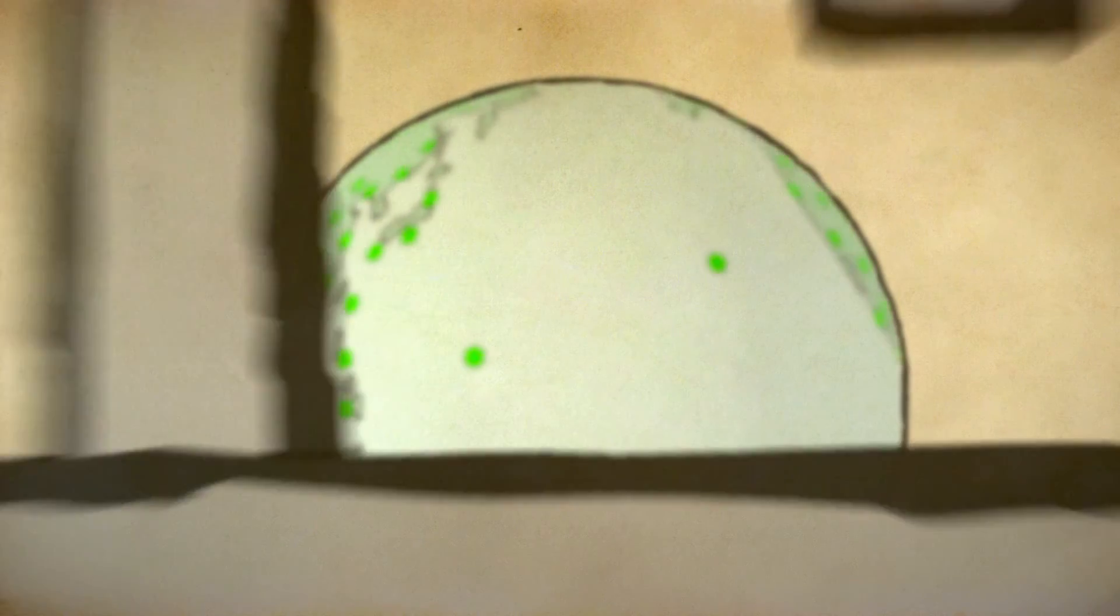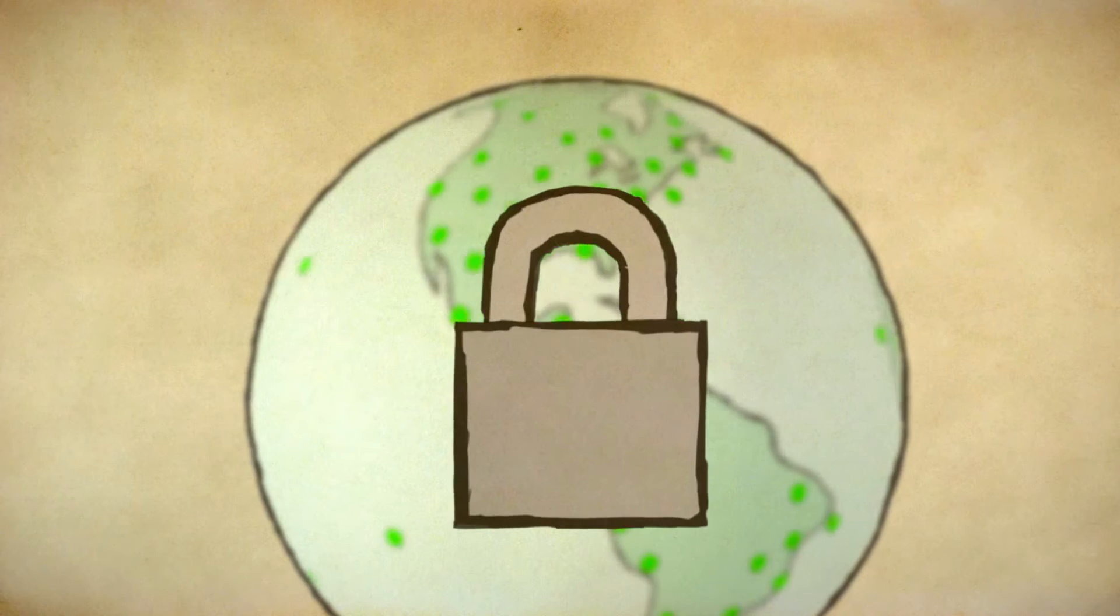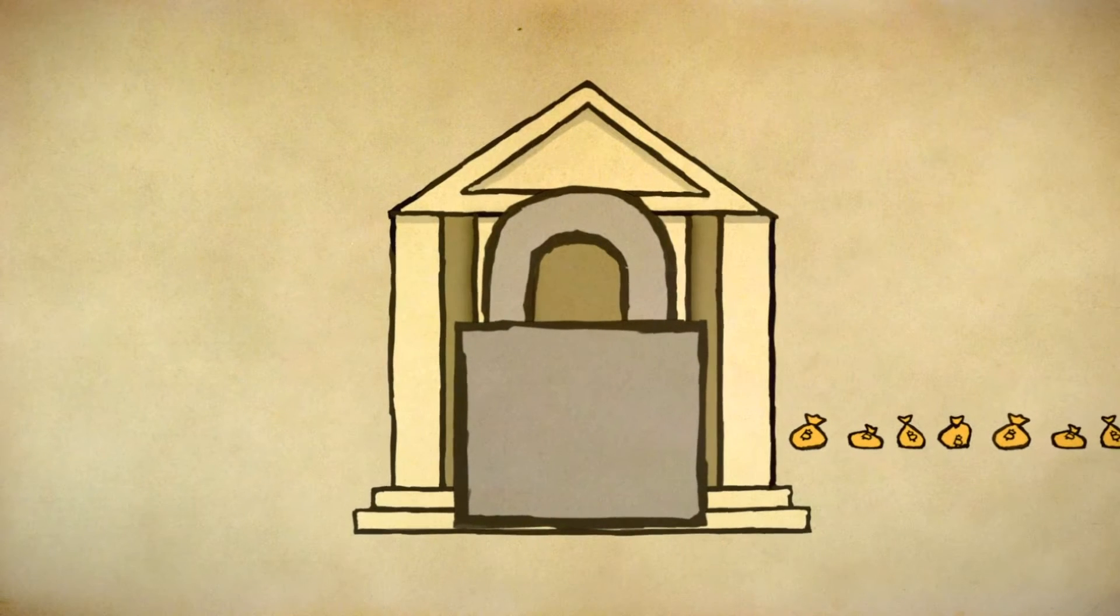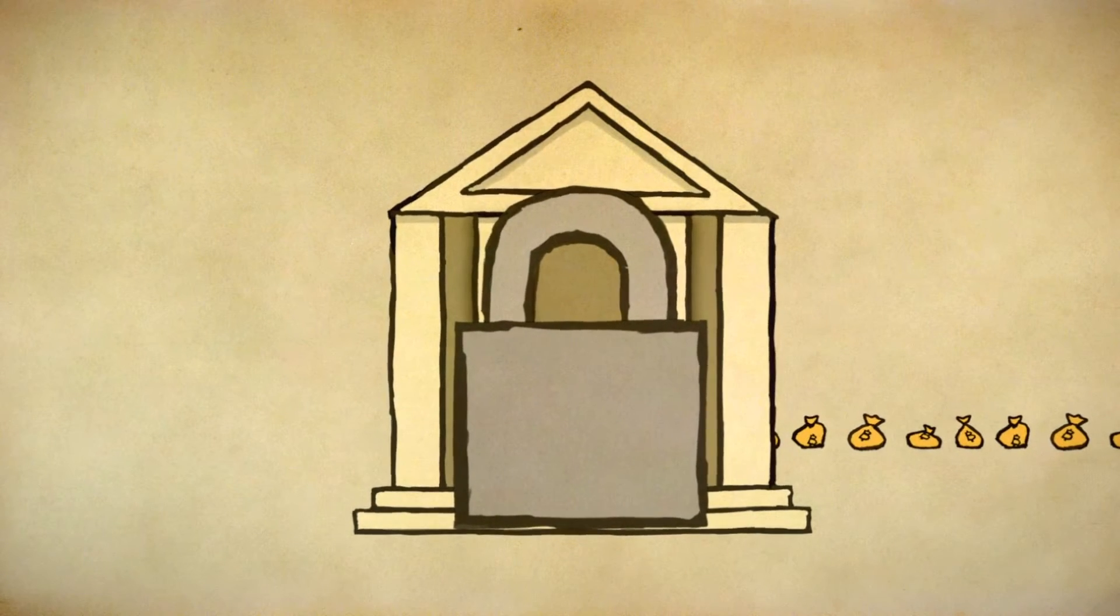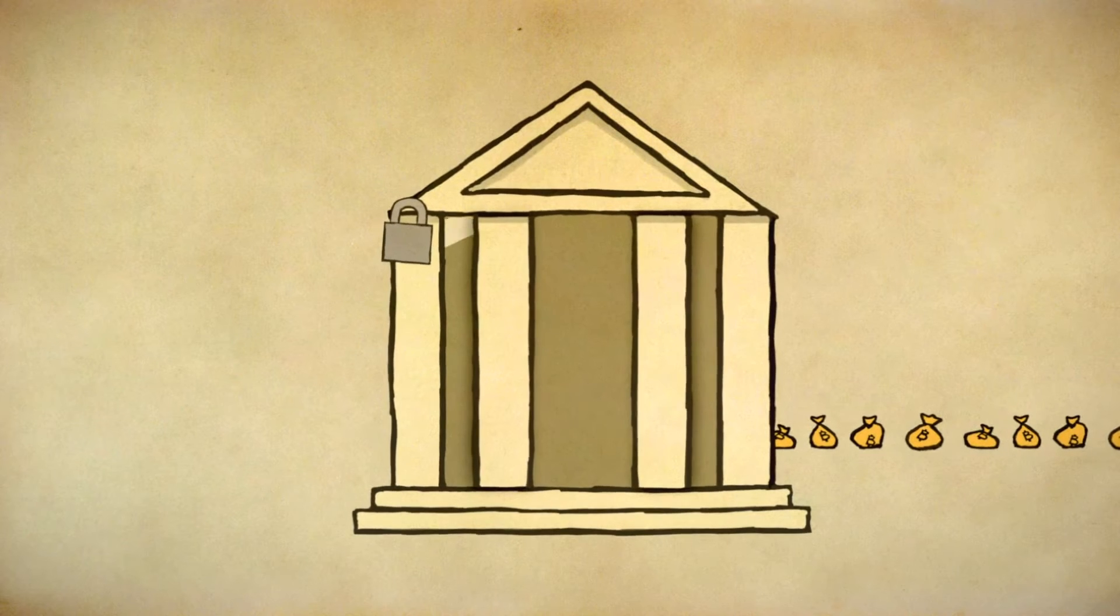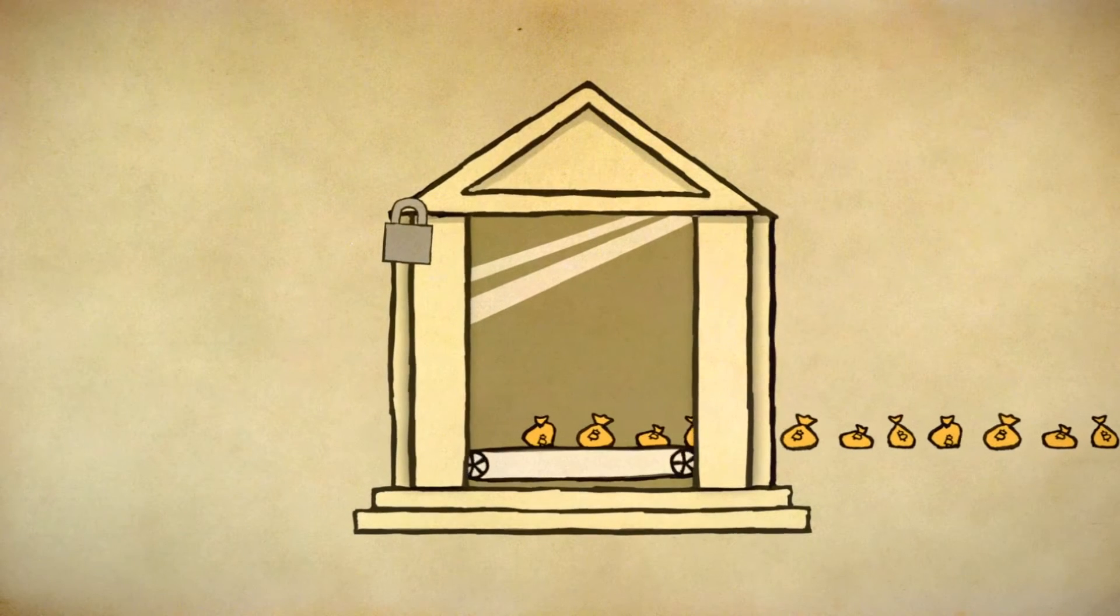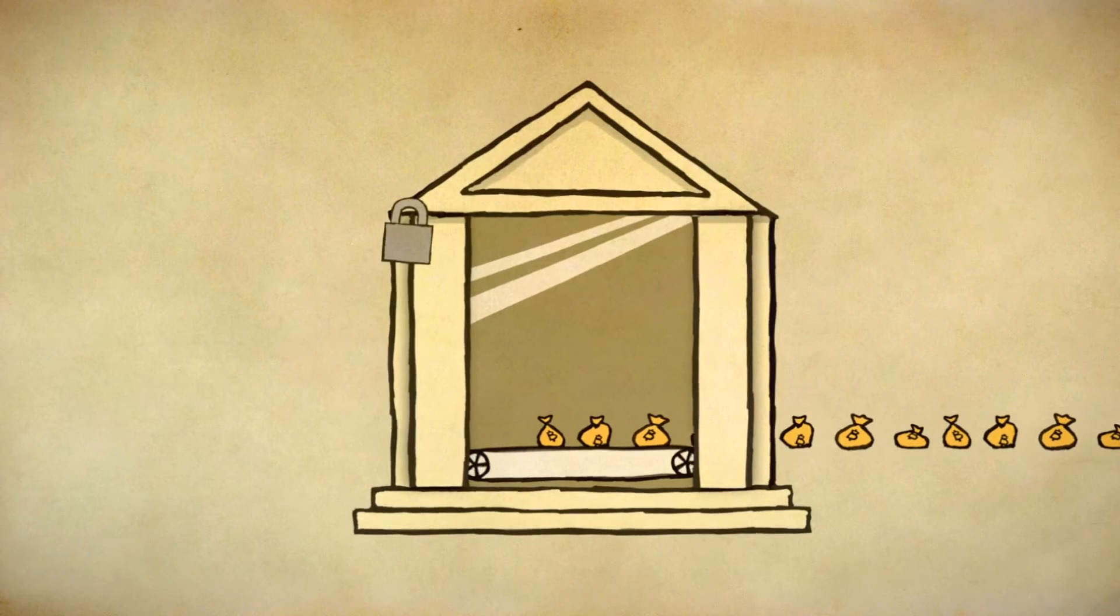We can use the very same cryptography that makes Bitcoin secure to audit off-chain payment systems, as well as effectively make it impossible to get away with fraud or theft. Imagine a plexiglass bank, where you can easily observe the inner workings.